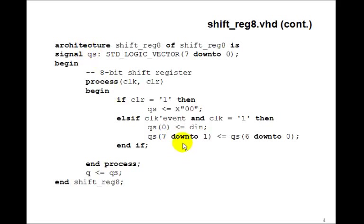Remember, QS has to be a signal because we want this QS0 that gets shifted into here not to be this QS0, which gets set to DN, but rather the original QS0 that we have when we started the process. Remember, signals don't get evaluated until the end of the process. Then we'll set Q to QS at the end.